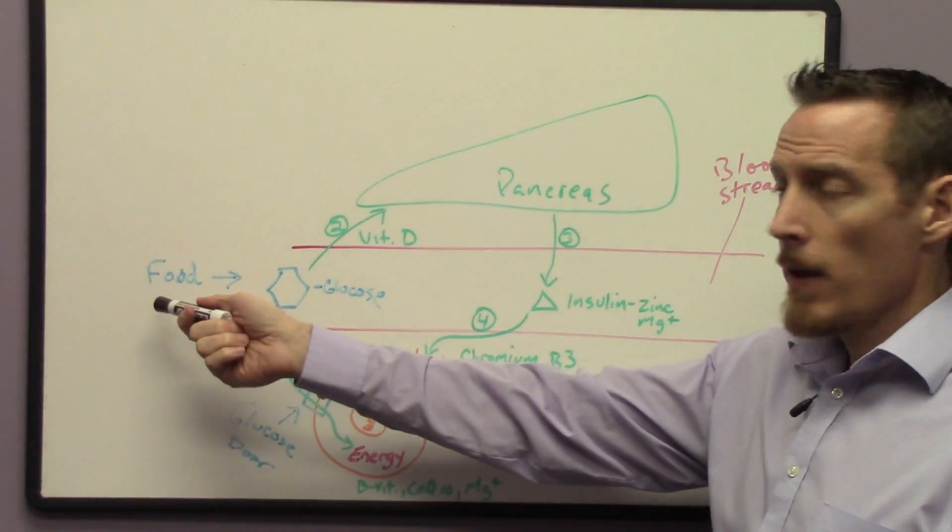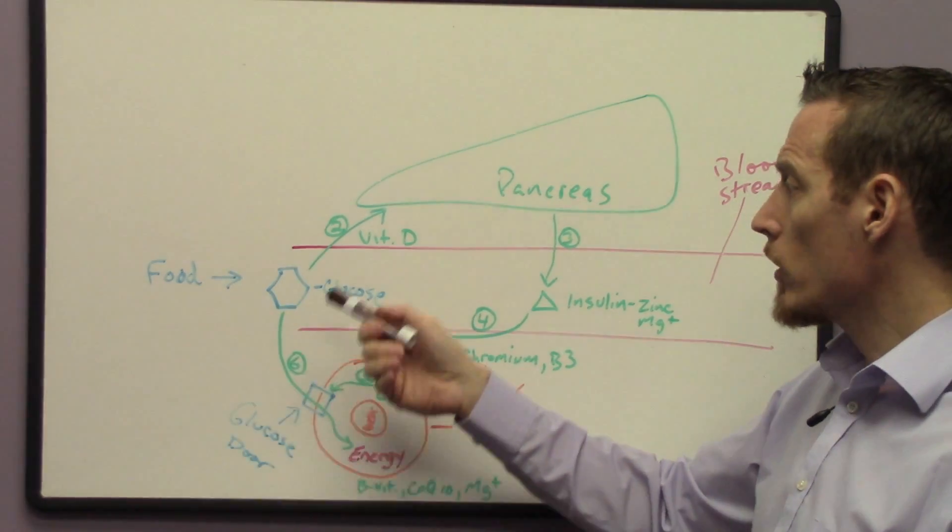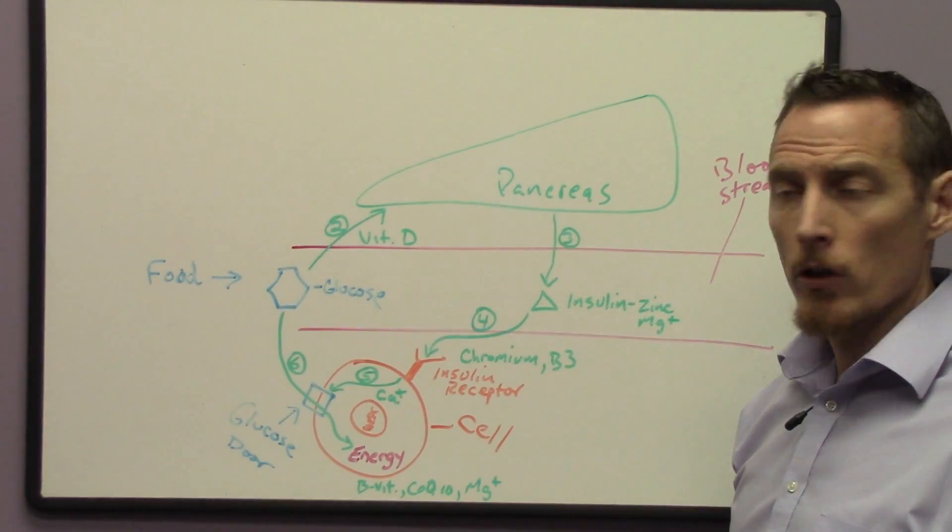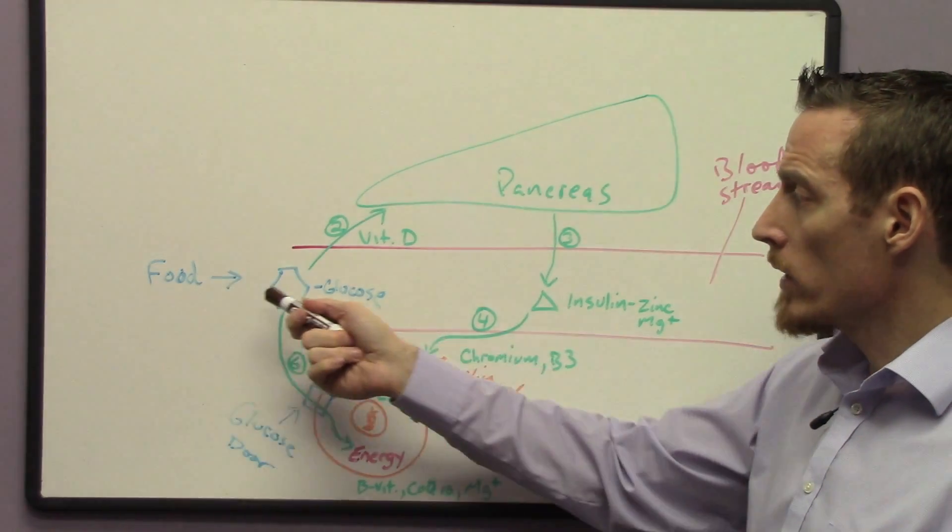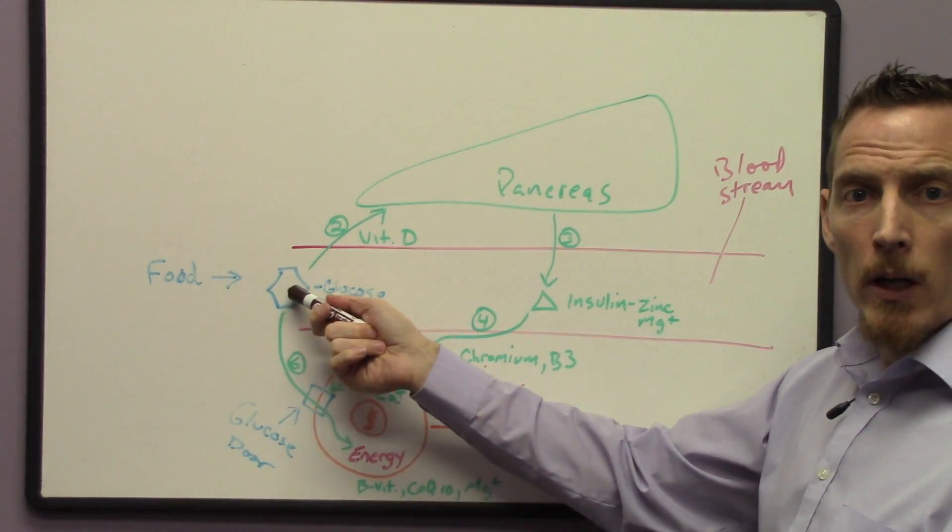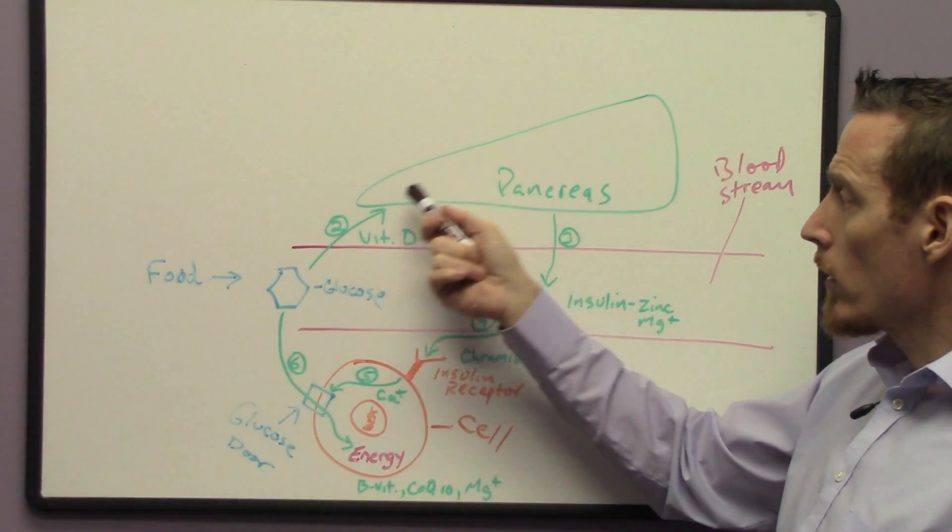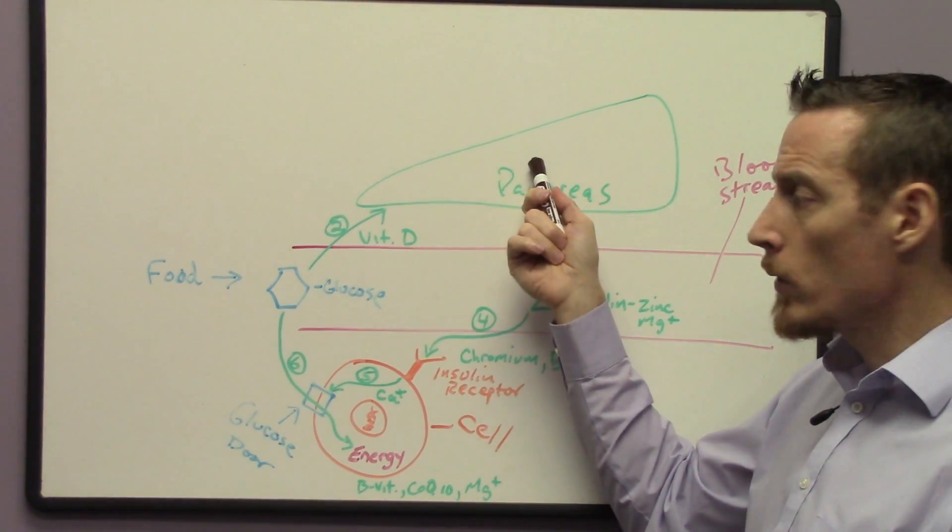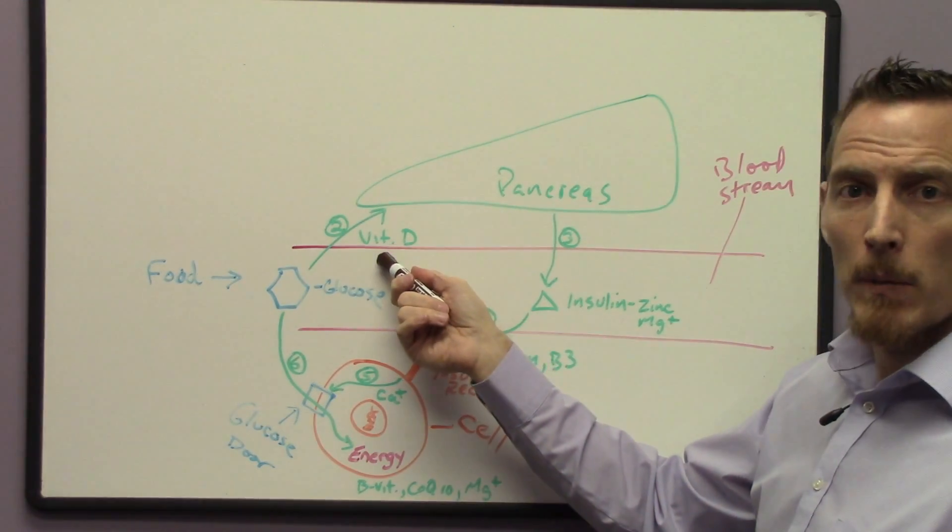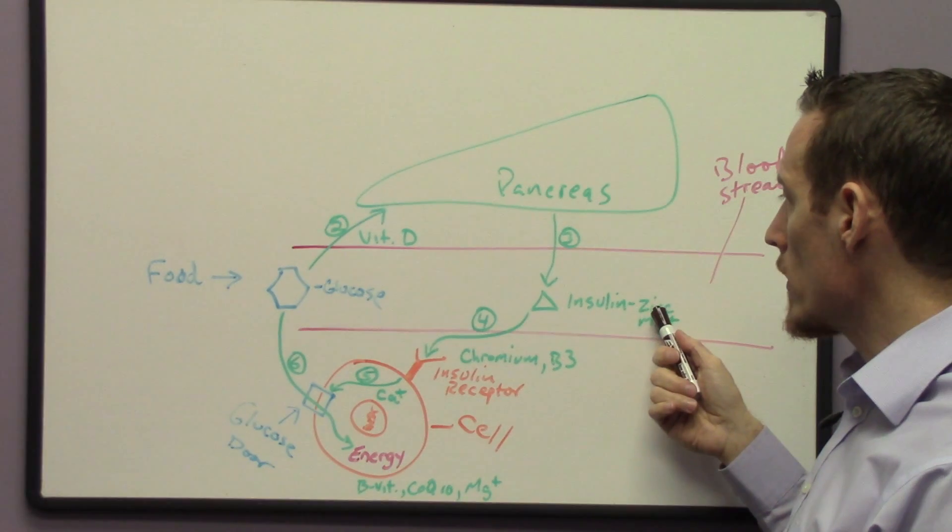Last time we talked about food's impact on blood sugar, we talked about the nutritional impact on blood sugar. We said that food breaks down into glucose and then that glucose in your bloodstream has to trigger for your pancreas to produce insulin and that requires vitamin D and it also requires zinc and magnesium.